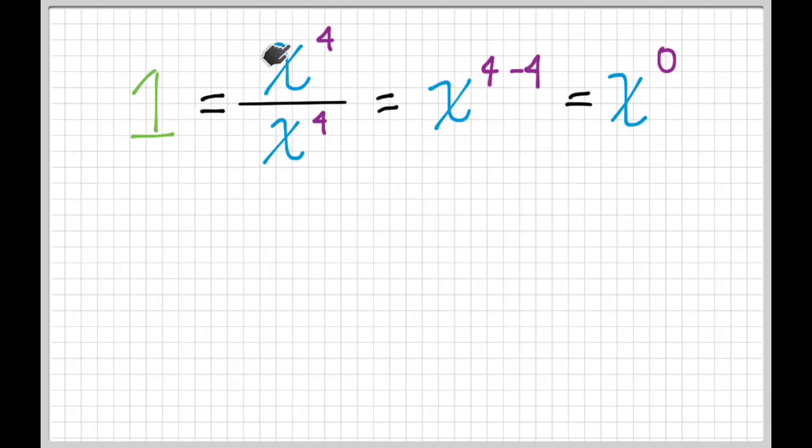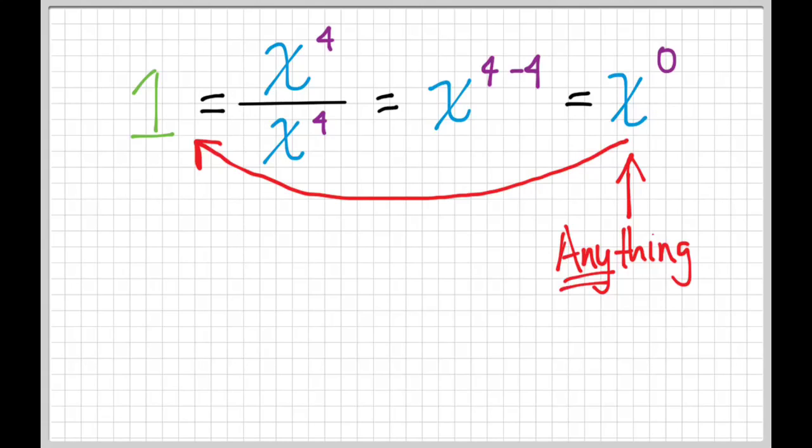We started off with x to the fourth over x to the fourth. We know it's equal to one. And, interestingly, we know it's equal to x to the zero. Well, you can do this with any base and any numbers, any letters or whatever. And you always get one equals x to the zero. Because x to the zero always equals one. And that x can be anything. You can stick anything for the base here. And if you raise the whole thing to zero, then you get one.